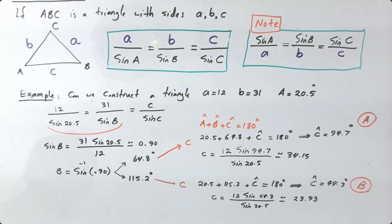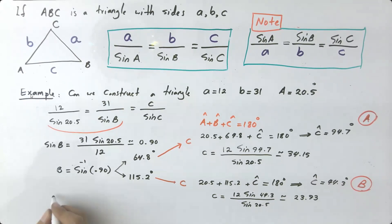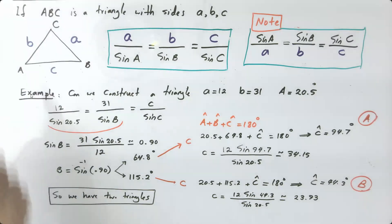So we have two triangles. In previous example, we have no triangle. In this example, we have two triangles.